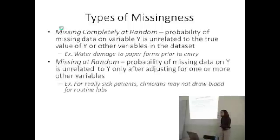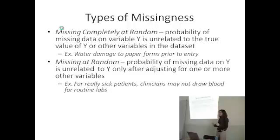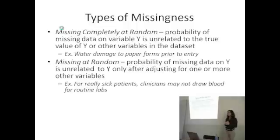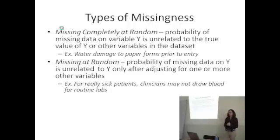Then we have missing at random. This is where the probability of missing data on variable Y is unrelated to Y only after you adjust for some other variable. Another way to look at this is that the missingness on variable Y is related to other variables. For example, sometimes if a patient is really sick, a clinician may not draw blood for routine or study-specific labs because the patient is just too sick to give blood that day. So the lab results you would have gotten from that patient are dependent on the fact that the patient was so sick that the clinician couldn't draw blood.